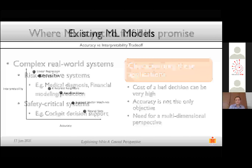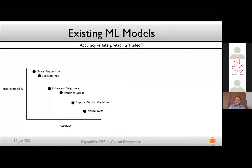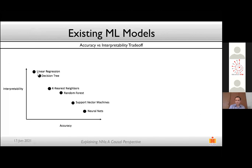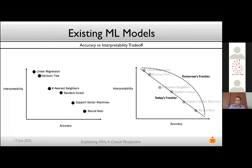In these kinds of applications, accuracy is perhaps not the only objective — one needs a multi-dimensional perspective. Today it's understood that for most existing ML models including deep learning, there's a trade-off between accuracy and interpretability. Linear regression and decision trees are most interpretable but less accurate on complex data, while neural networks are far more accurate but very black-box in explainability. Ideally we want accurate models that are also interpretable — that's what we're looking for.